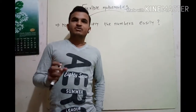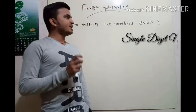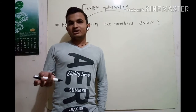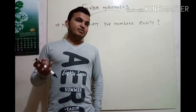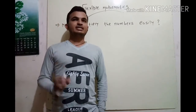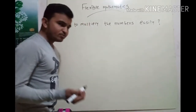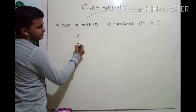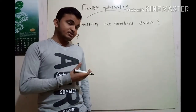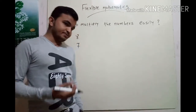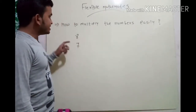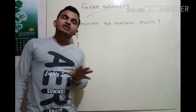So first of all let's start with the easier example, meaning by taking a single digit number. You already know how to multiply single digit numbers and remember the tables, I hope so. So if you want to multiply 8 and 7, the answer you already know is 56 — but how do we get the answer using this trick? Here you have to consider that 8 and 7 are both near to 10.